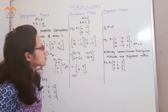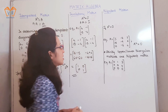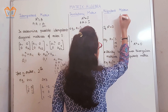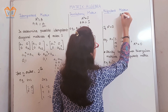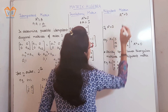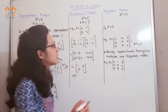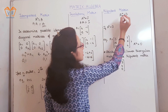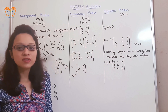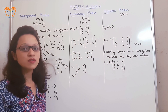The last type is the nilpotent matrix. Any square matrix A is called a nilpotent matrix when A raised to m equals 0, where m is the smallest positive integer that produces the null matrix. This m is also called the index of the nilpotent matrix.